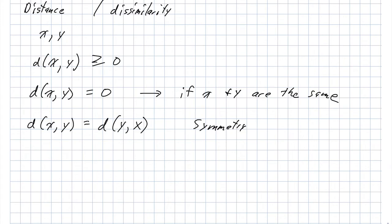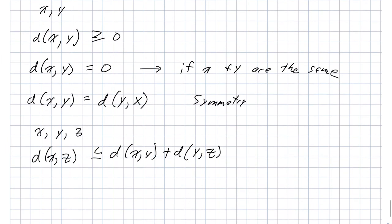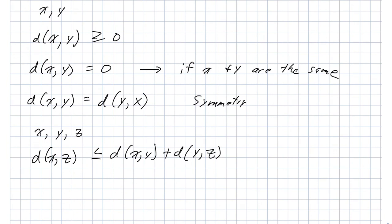And then finally, we want our distance metric to satisfy the triangle inequality. So here I have samples x, y, and z. And the distance from x to z is always going to be less than or equal to the distance from x to y plus the distance from y to z. And in Euclidean space, this always is satisfied.